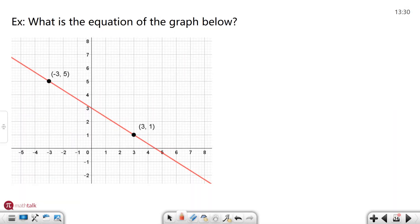I have another equation here. What is the equation of the graph below? So again I want to use my formula y equals mx plus b and let's see my b value is where it crosses the y-axis. In this case it is 3, positive 3, so positive 3.